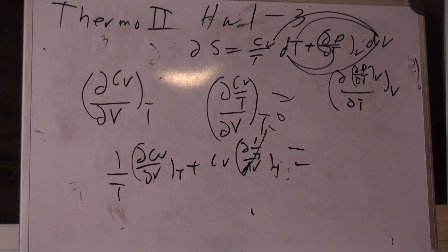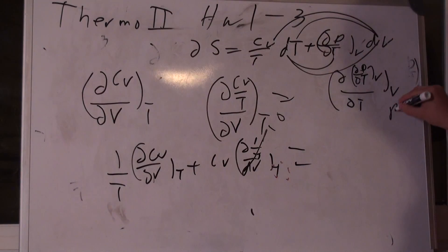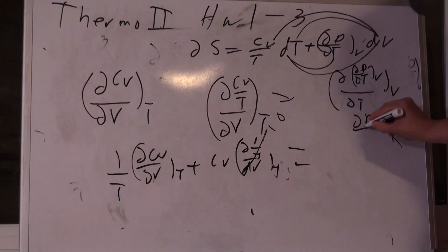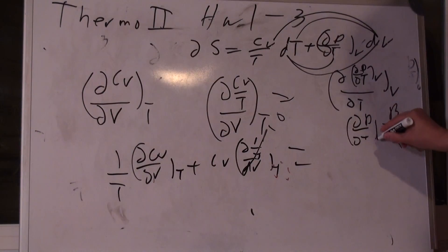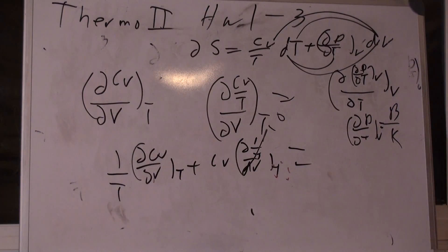So that's goofy thing number one. Goofy thing number two. Oh, I got this thing over here. Well, oh, dP/dV. I've seen that somewhere. Yes, that's beta over kappa, right? That's true, right? It is true.